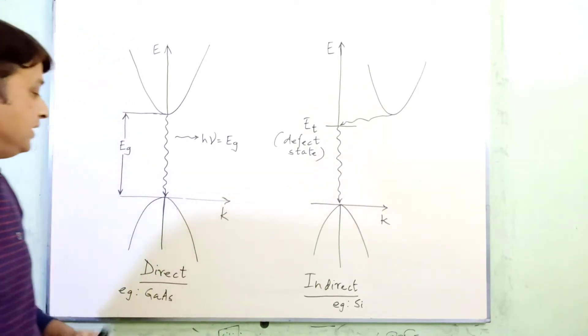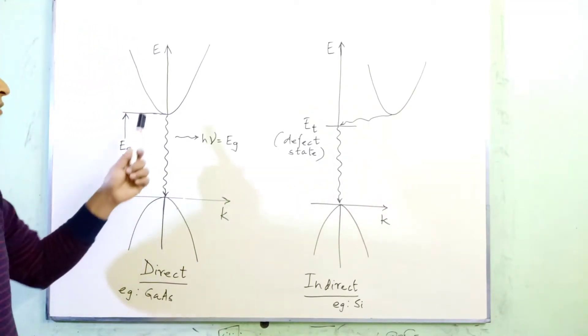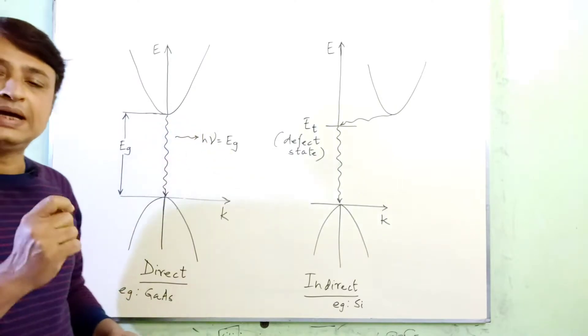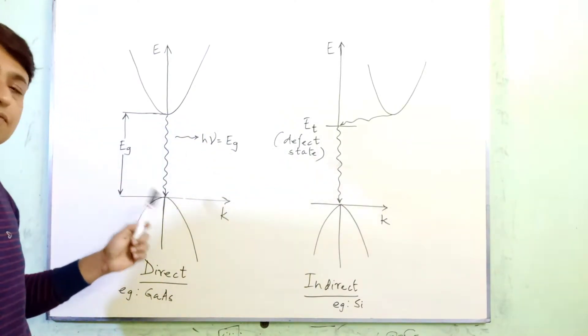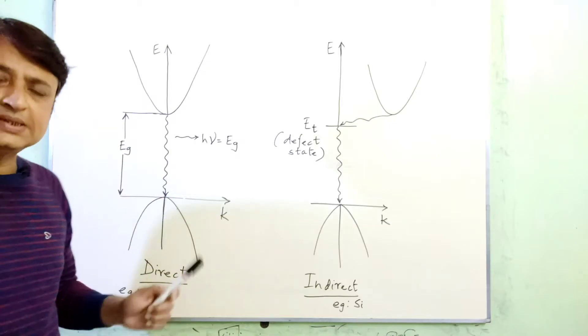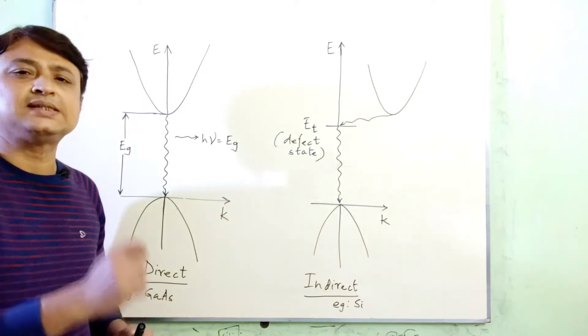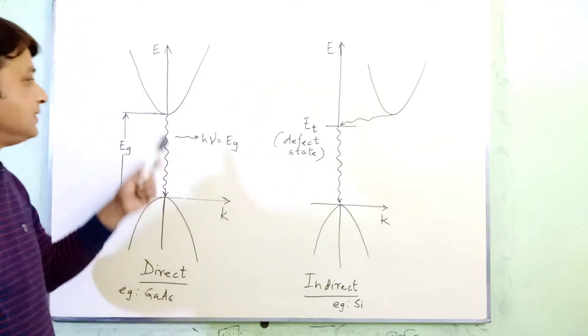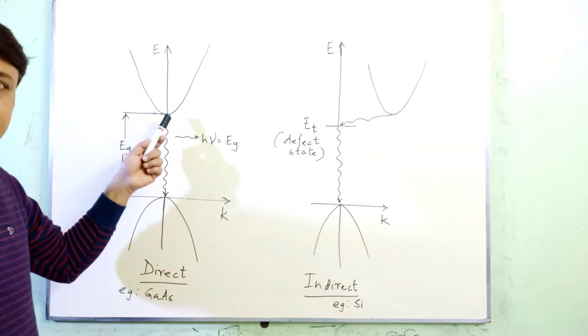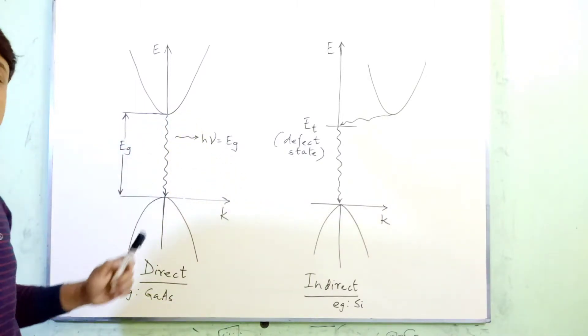As you can see from this figure, the minimum of the conduction band for gallium arsenide and the maximum of the valence band for the same material require the same value of K. For both cases, the value of K equals zero.